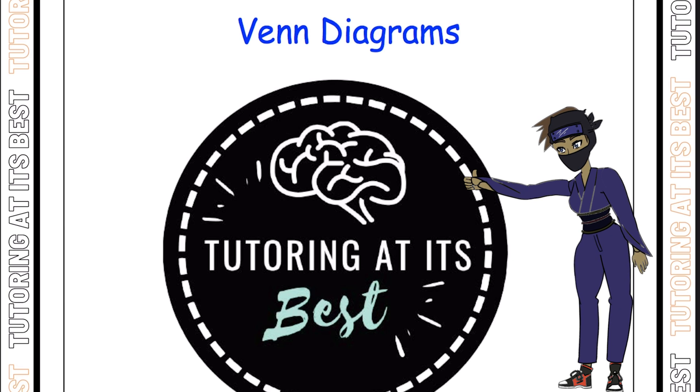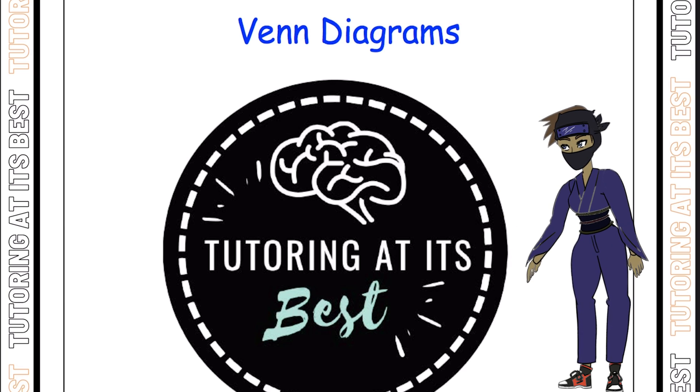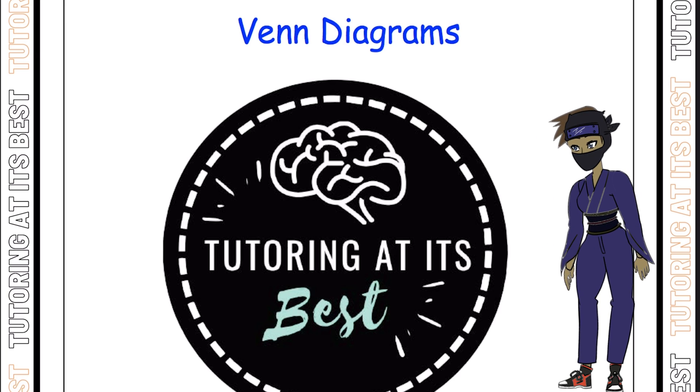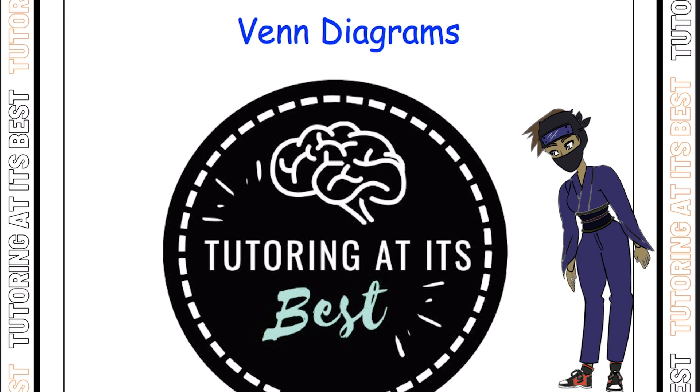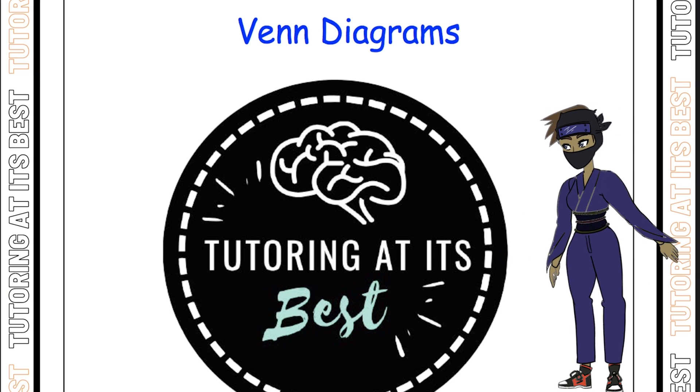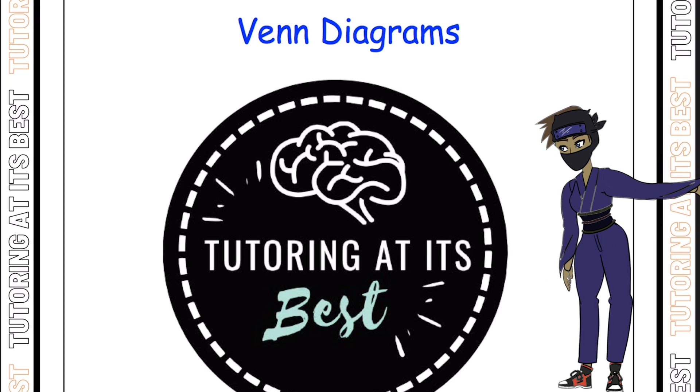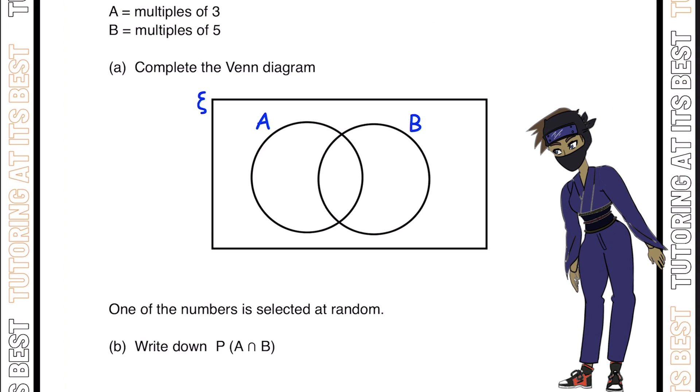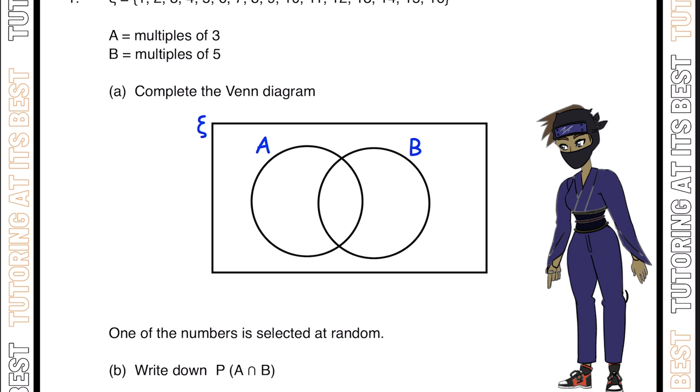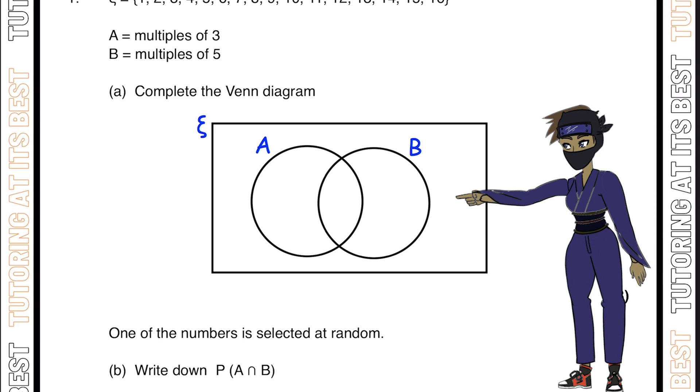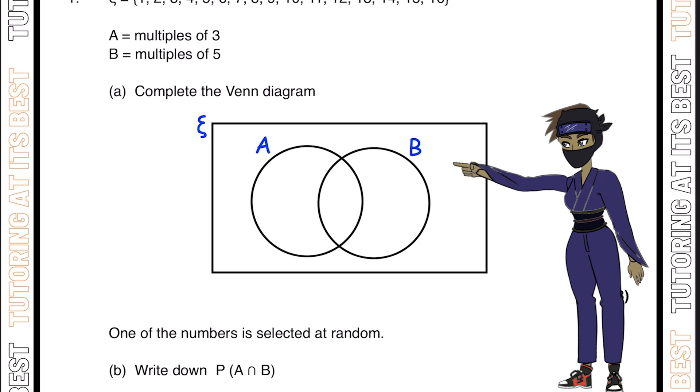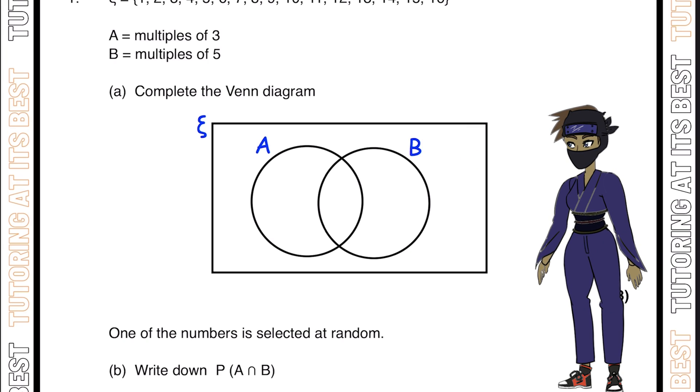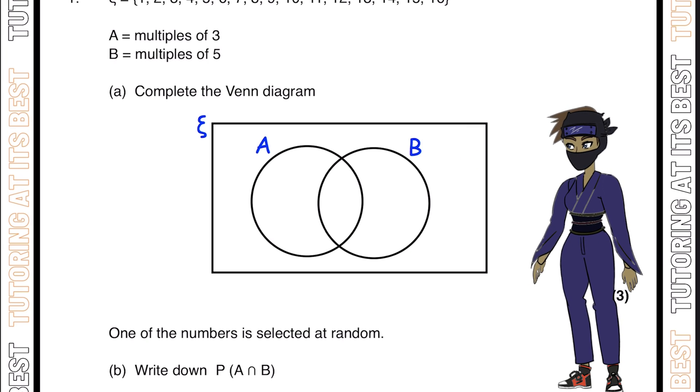These powerful tools help us visualize relationships between different groups and analyze data in a more systematic way. Join me as we explore the fascinating concepts of Venn diagrams and sets. To begin, let's start by understanding the concept a little bit more. Sets are collections of objects or elements that share common characteristics, and we'll delve into the various types of sets, including your intersections and your union sets.